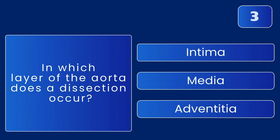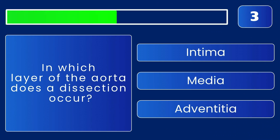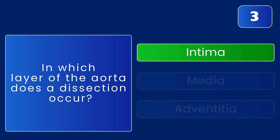In which layer of the aorta does a dissection occur? The answer is the intima — this is where the tear initiates.